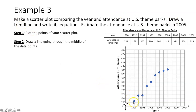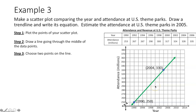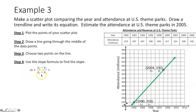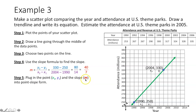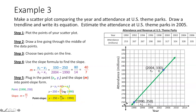Now draw a trend line — a line through these points as best we can. To find the equation, pick two points on the trend line (not necessarily scatter plot points). Let's choose two points on the trend line: (1990, 250) and (2004, 330). Using the slope formula: (330 - 250) / (2004 - 1990) = 80/14 = 40/7, approximately 4/7. Now plug into point-slope form with x₁ = 1990, y₁ = 250, and m = 40/7.